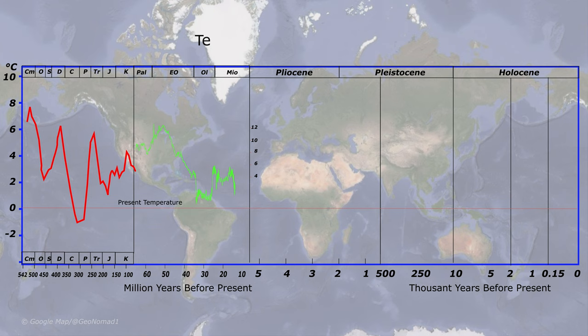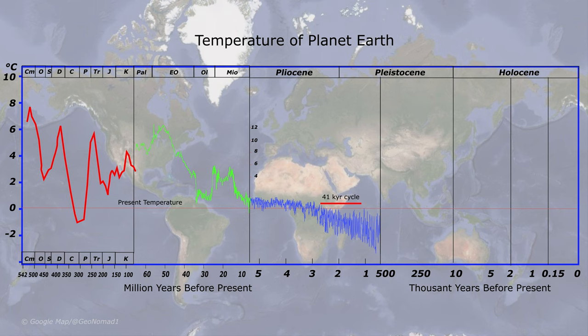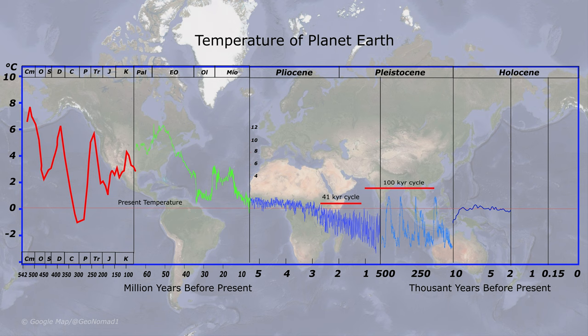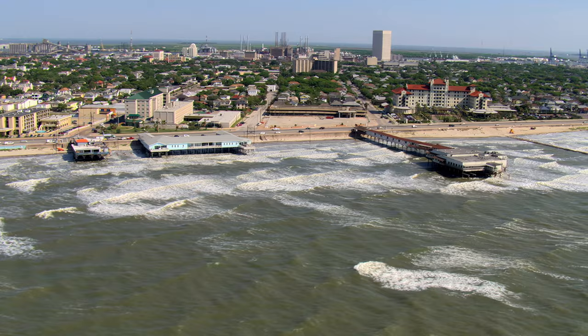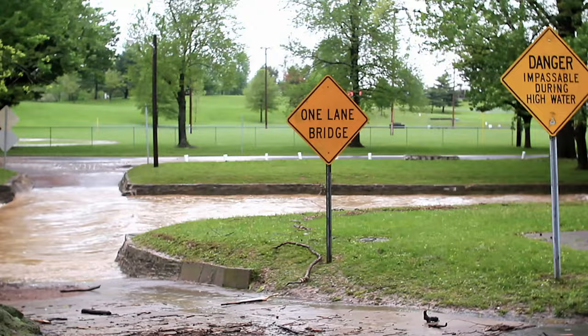We are now living in the fourth ice age, quaternary glaciation. As the Pliocene began 5.3 million years ago, Antarctica gradually began to freeze, and the quaternary glaciation started in earnest about 2.58 million years ago. Before the quaternary glaciation, temperatures were 2 to 3 degrees Celsius higher than now, and the global sea level was 25 meters higher.